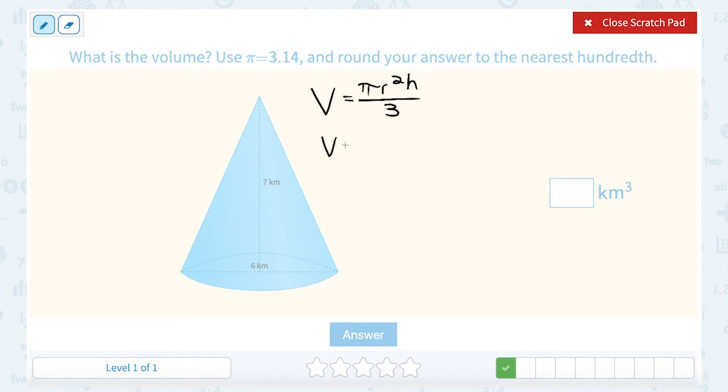So when we plug our numbers in, volume is equal to, well, they told us to use 3.14 approximation for pi. Next, I need to do my radius. Well, in my diagram, they showed us all the way across through the center, which would actually be the diameter is 6. But remember, the radius is half of the diameter. So half of 6 is 3. So the radius, meaning from the center just out to one edge, would be 3 kilometers.